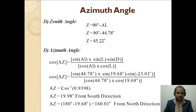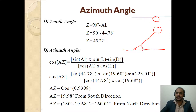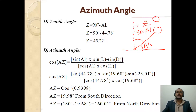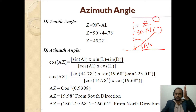The zenith angle is the angle between the reference vertical line and the imaginary line from the observer to the sun — in other words, 90° minus the altitude angle. The zenith angle is required when calculating a variable tilt angle. In this case, the zenith angle = 90° − 44.78° = 45.22°.